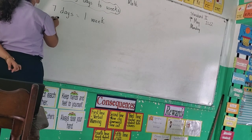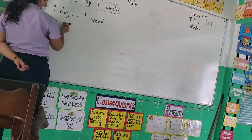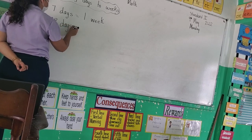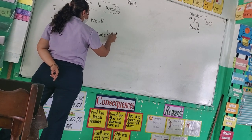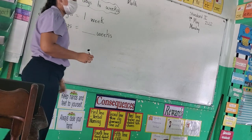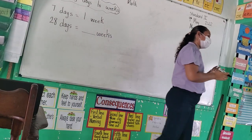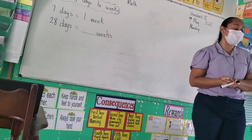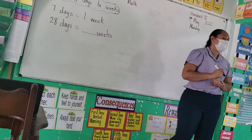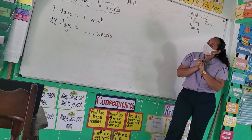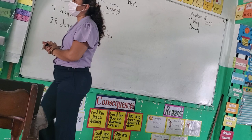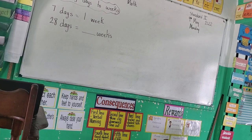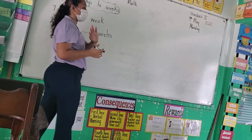If I have 28 days — let's say Lucy went on vacation and she took 28 days — how many weeks did she take? So Lucy went for 28 days on vacation, but we want to find out how many weeks she went.